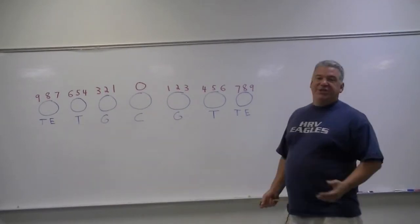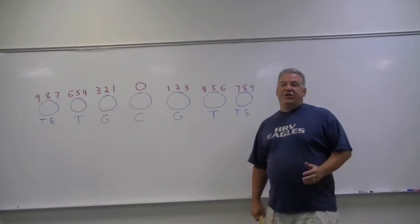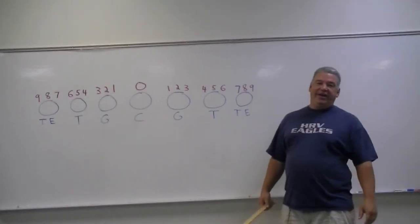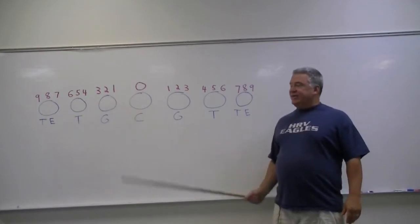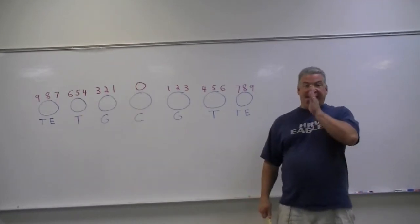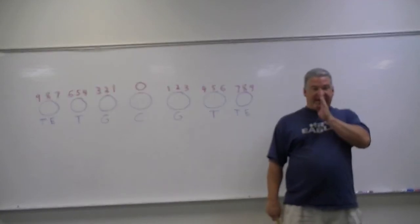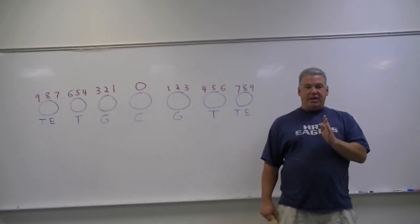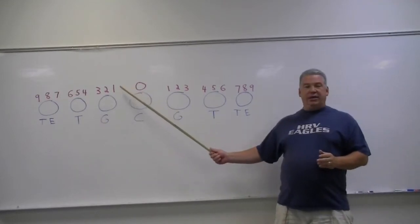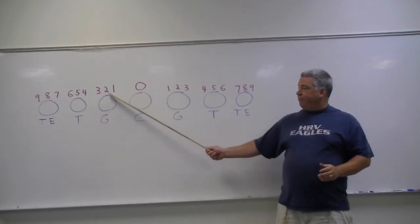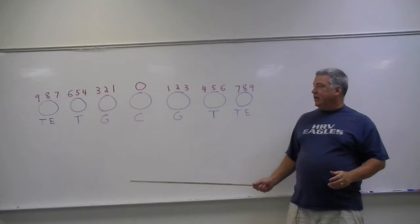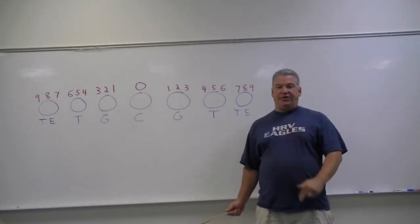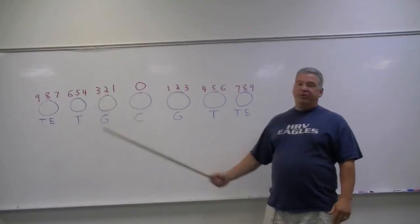And from there we just number our way out and each offensive lineman has three techniques that you can play on him. So if you're playing inside shade of the guard, that means my nose would be on his inside shoulder pad, then that's a one technique. If you're straight up on him that's a two technique. And if you're outside shade of him, so nose on outside shoulder pad, then you're a three technique.